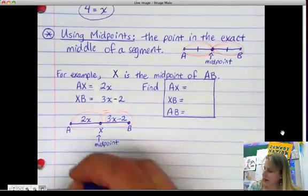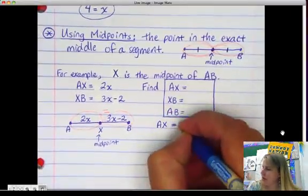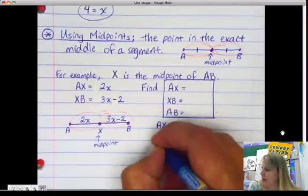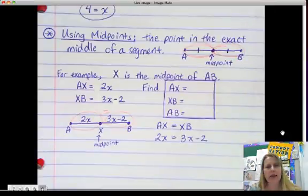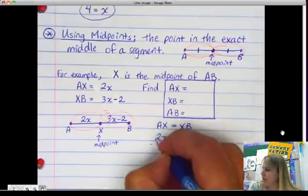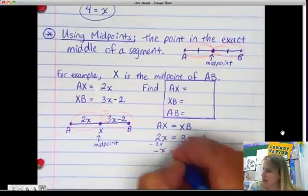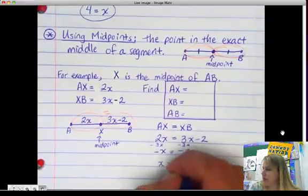So, that means that this length is equal in length to this length. So, AX is equal to XB. So, when we plug it in, 2X is equal to 3X minus 2. Now, it's just a matter of solving for X. So, when we minus 3X from both sides, we get negative X equals negative 2. Divide by negative 1, you get X equals positive 2.